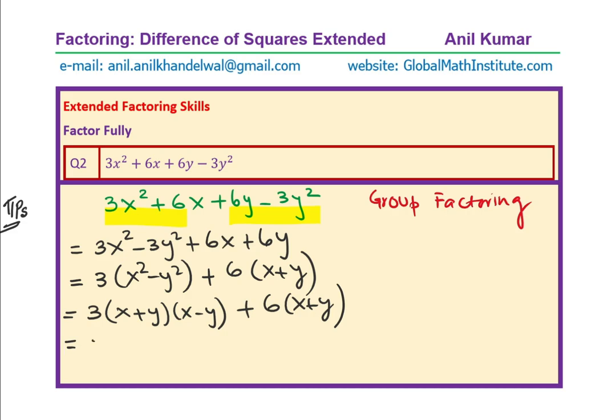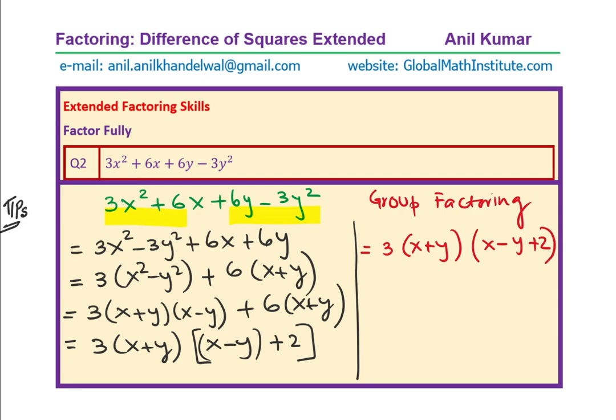Now, you can clearly see that we can factor 3(x+y) and we are left with (x-y) in the first case and 2(x+y). (x+y) has been factored. So, that is what we have got. And so, we can write down our answer which is this can be factored as 3(x+y)(x-y+2). Do you see that? So, that becomes the solution of this particular question. Very, very interesting question. I hope you understand and appreciate this particular strategy.